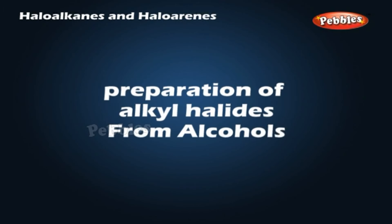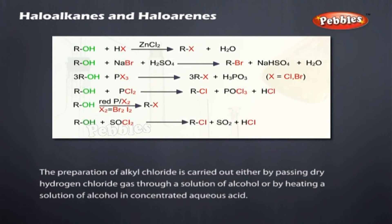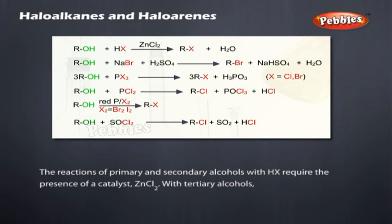Preparation of alkyl halides from alcohols: preparation of alkyl chloride is carried out either by passing dry hydrogen chloride gas through a solution of alcohol, or by heating a solution of alcohol in concentrated aqueous acid. The reactions of primary and secondary alcohols with HX require the presence of a catalyst, ZnCl2.